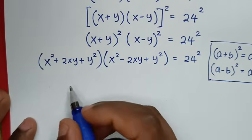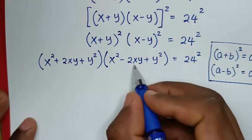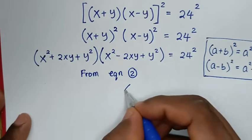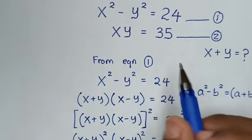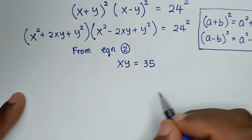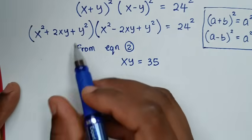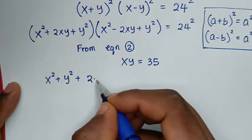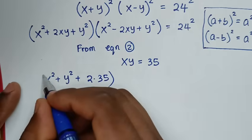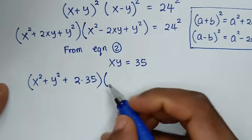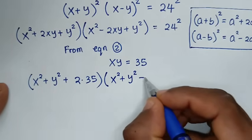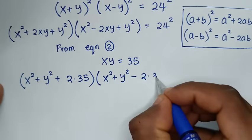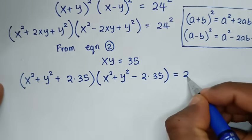From equation 2, xy = 35. We substitute this in. So it becomes (x² + y² + 2xy)(x² + y² - 2xy) = 24², where 2xy = 2 × 35 = 70. This gives us (x² + y² + 70)(x² + y² - 70) = 24².